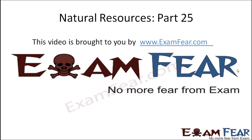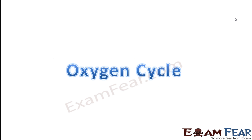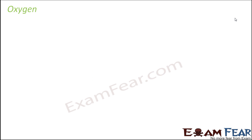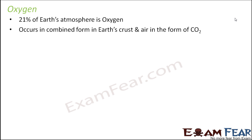This video on natural resources part 25 is brought to you by examfear.com. Let us move on to the next cycle, which is the oxygen cycle. Before we talk about the oxygen cycle, what is oxygen and in what amount is it present in our atmosphere? 21% of the atmosphere is oxygen — maximum is nitrogen and the next is oxygen.